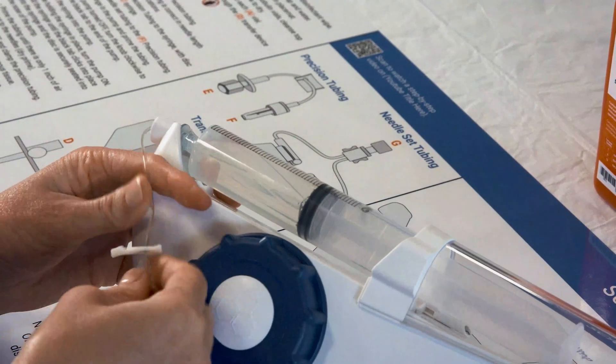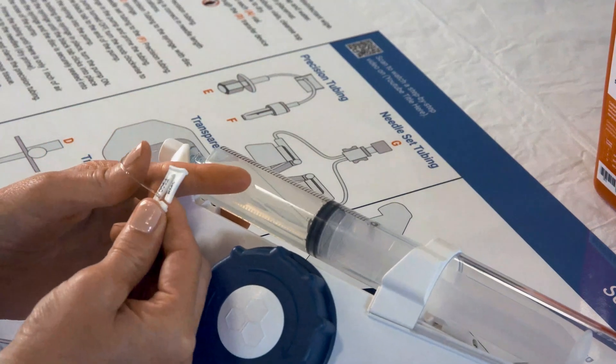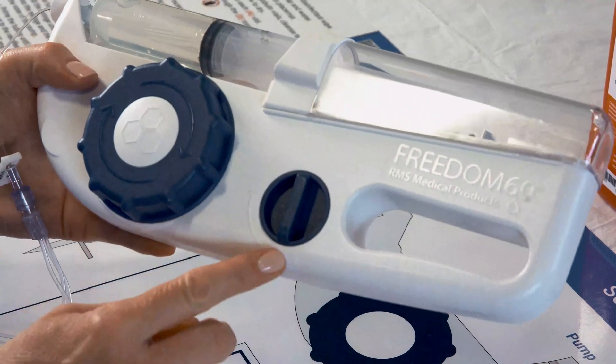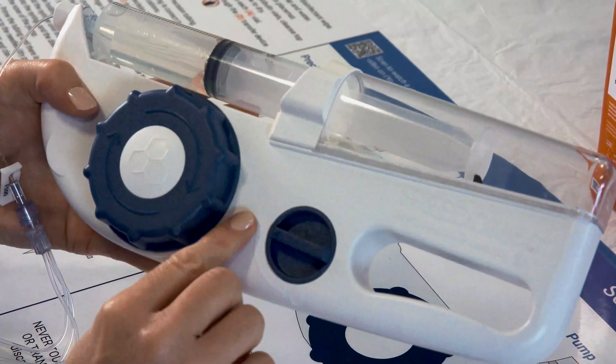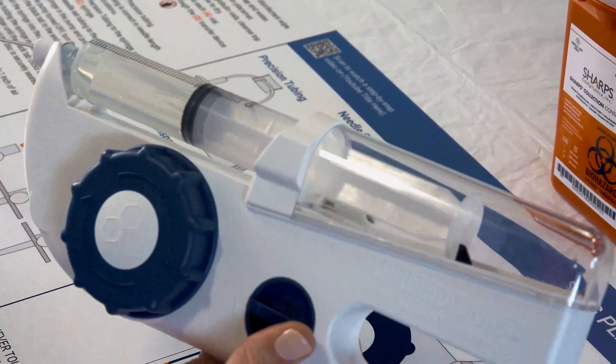Unclamp the line before turning on the pump to start your infusion. The pump will infuse your SCIG dose and you will know when the infusion is complete when the syringe is empty.